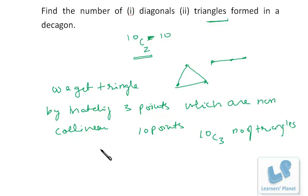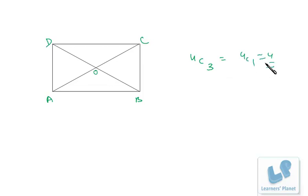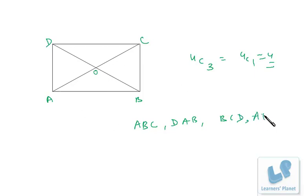As a practical example, take a rectangle with vertices O, A, B, C, D — using the four vertices. Since there are four vertices, the number of triangles is 4C3 = 4C1 = 4. The four triangles are ABC, DAB, BCD, and ADC.